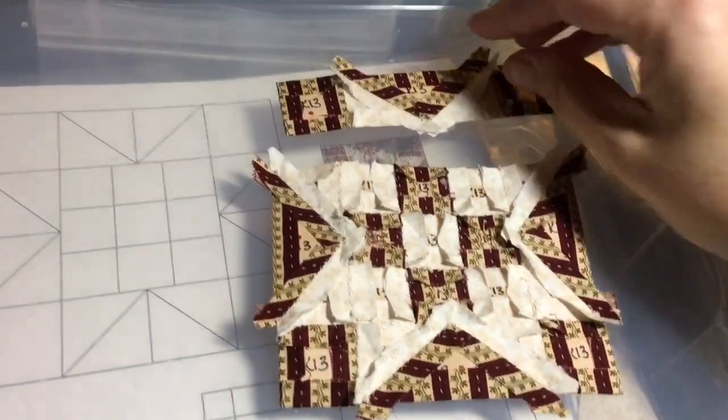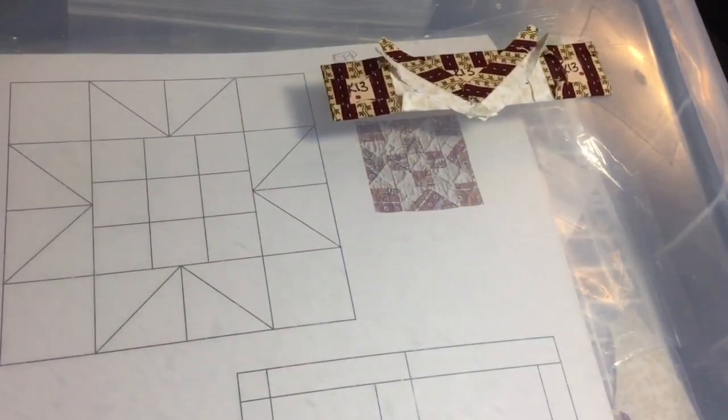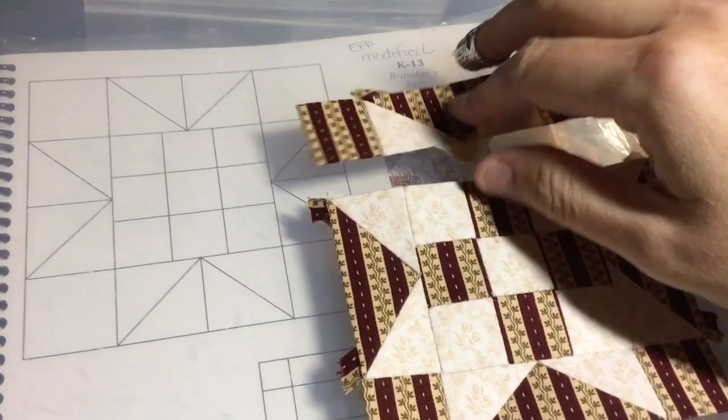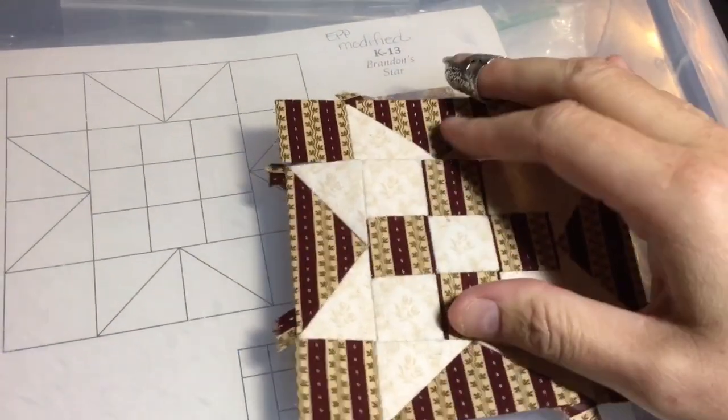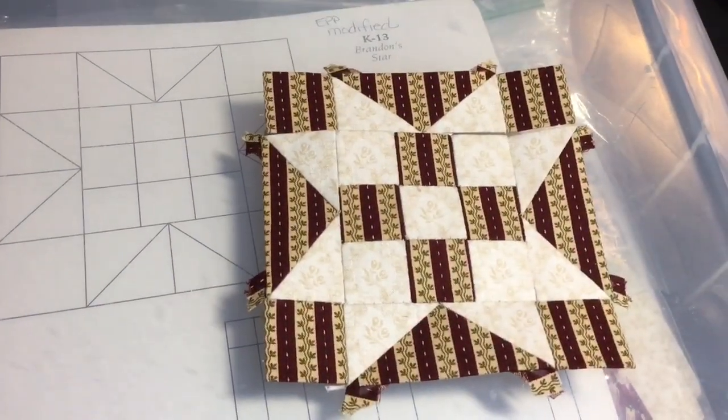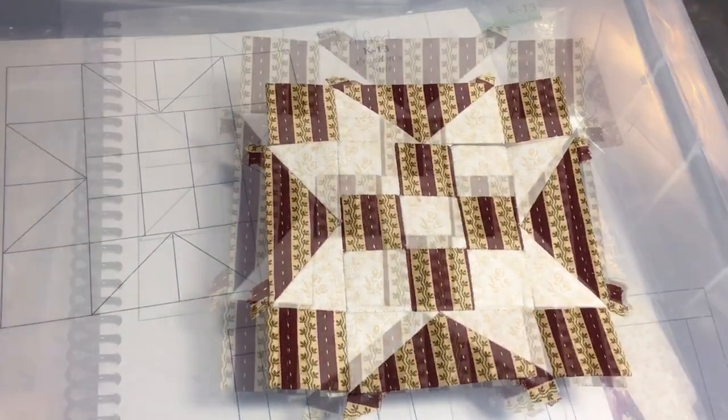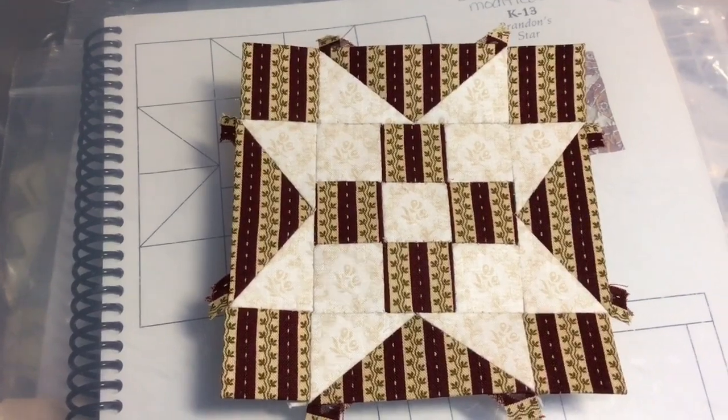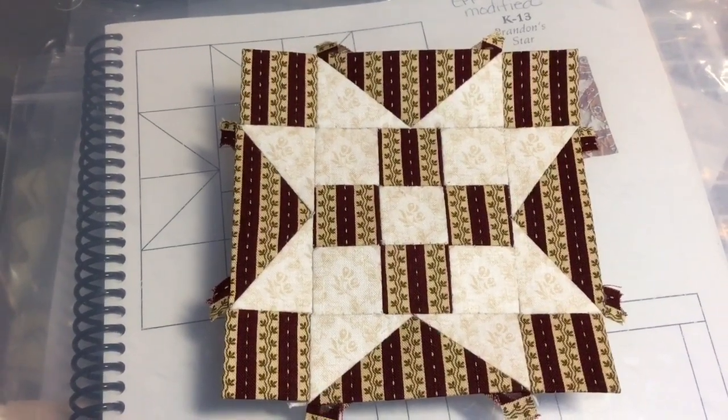Top row is now assembled, so this is just a matter of flipping this over and assembling this top row to this bottom section, and I will have a done block. Now I have the top row attached to my center, and I have a completed K13 block.